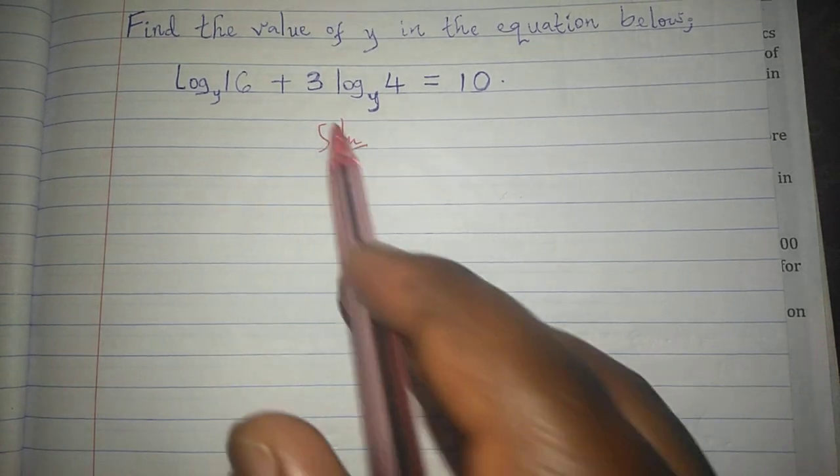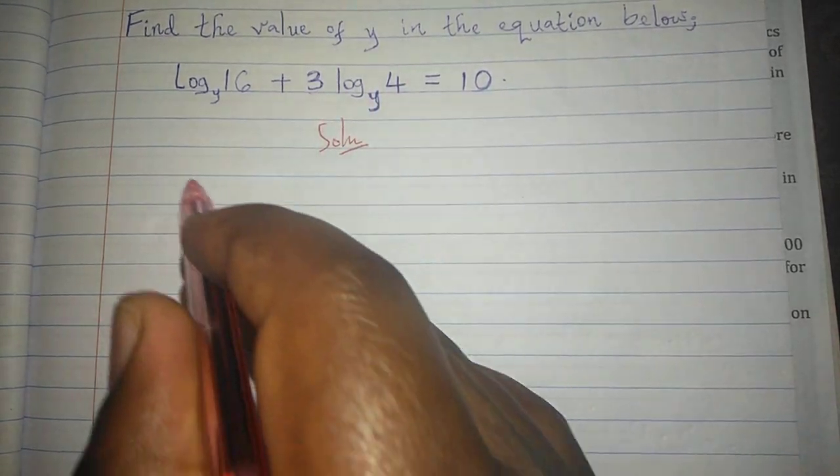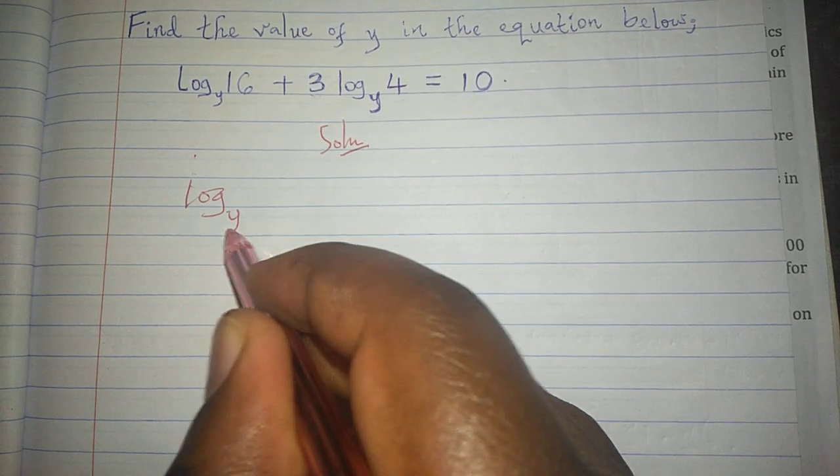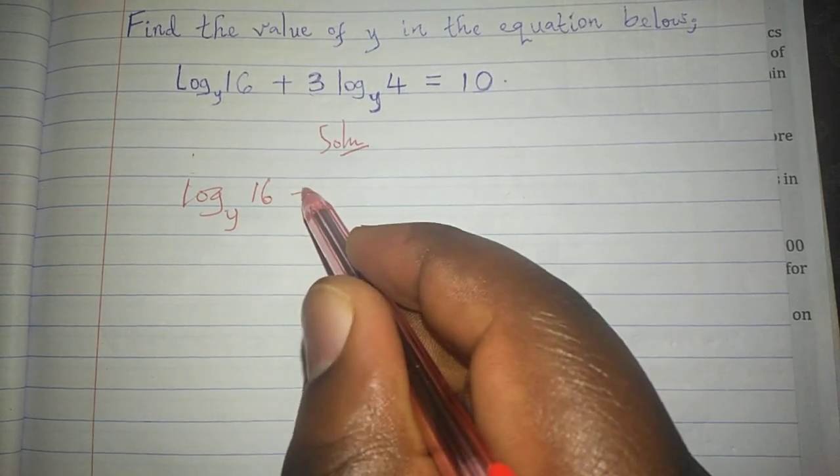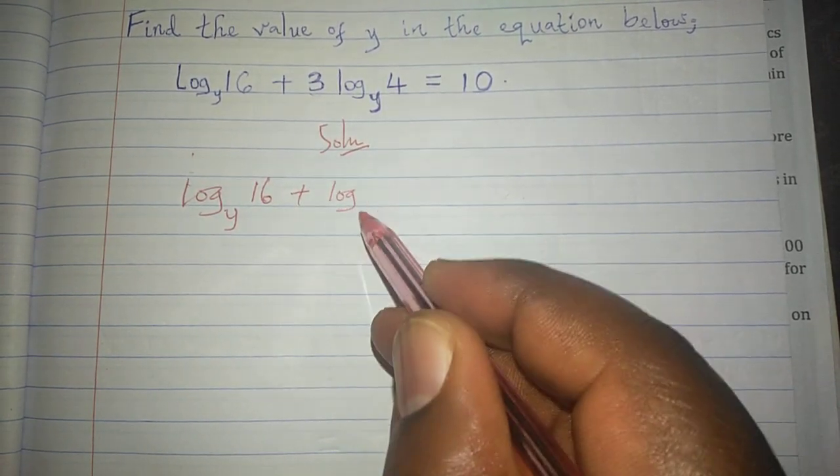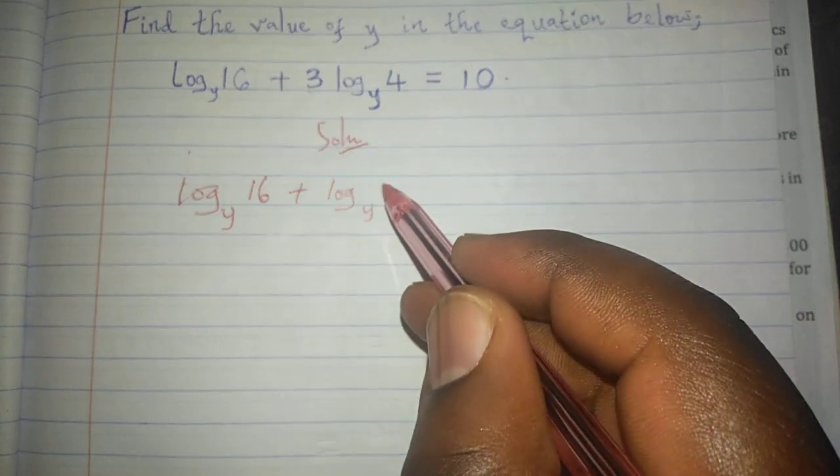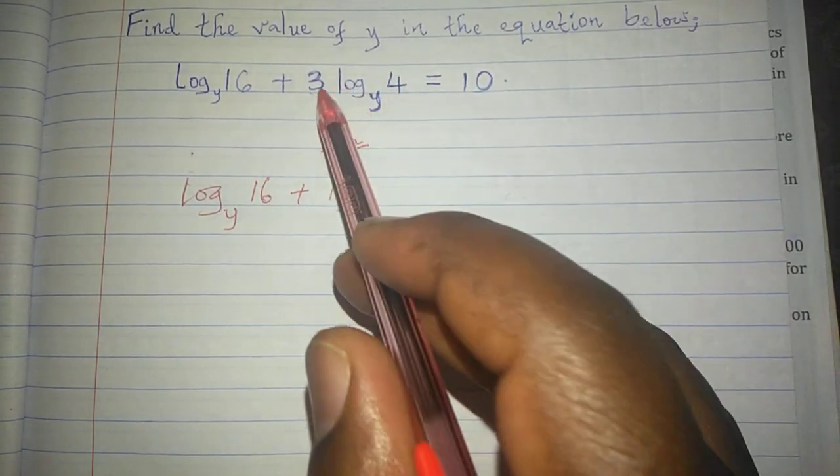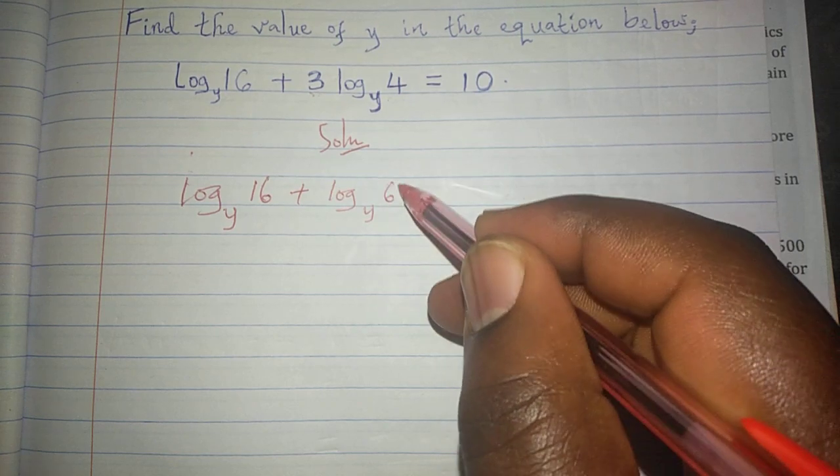For example, in this case, we can start by saying the logarithm to base y of 16 plus the logarithm to base y of 4 power 3, which will be 64.